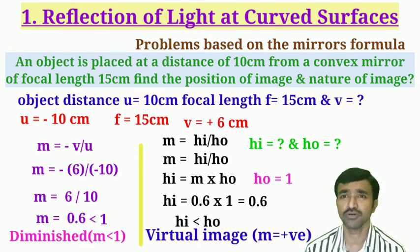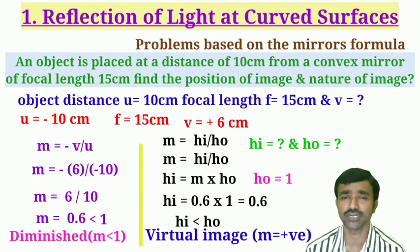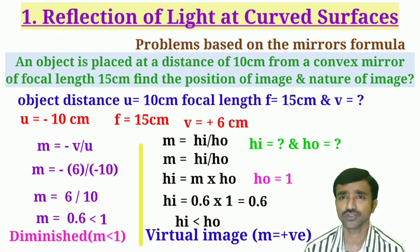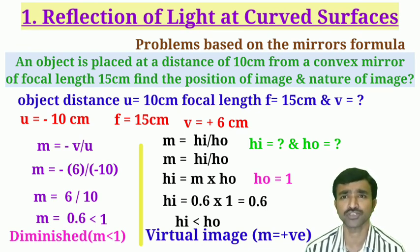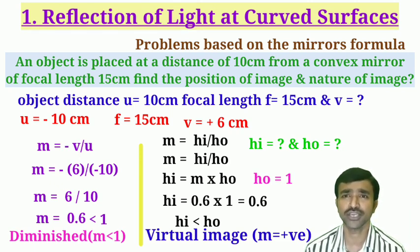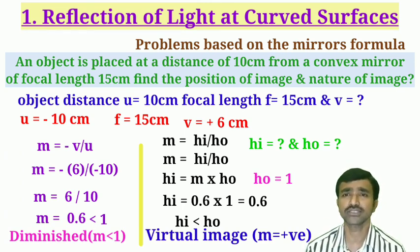So in this class I discussed two varieties of problems. A third variety is also possible — for example, if image distance is given as 6 cm and object distance as 10 cm, you would be asked to find the focal length, which would give 15 cm. Try it now. I will discuss the next model problem in the next class. Thank you.